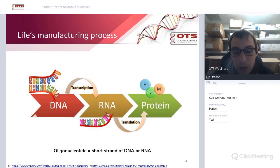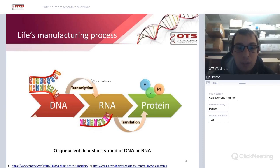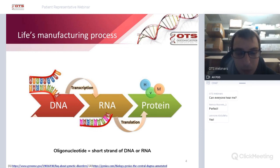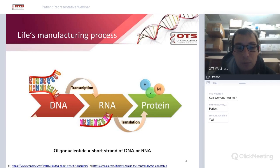This is where oligonucleotides come in. They can target either the RNA or the DNA to inhibit protein production. For those who don't know, at its simplest an oligonucleotide is just a short strand of DNA or RNA — that's what I mean whenever I use the word.